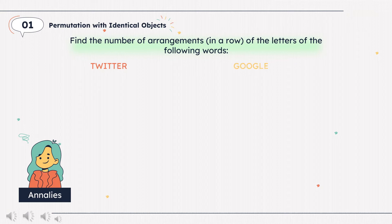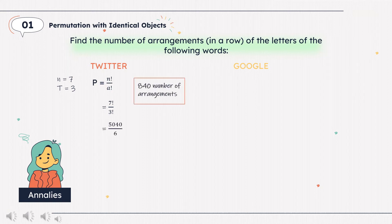Number 2, Google. For the solution in number 1, there are total of 7 letters to be arranged in a row of which 3 Ts are identical and the remaining different. The total number of permutations will be 7 factorial over 3 factorial or 840.